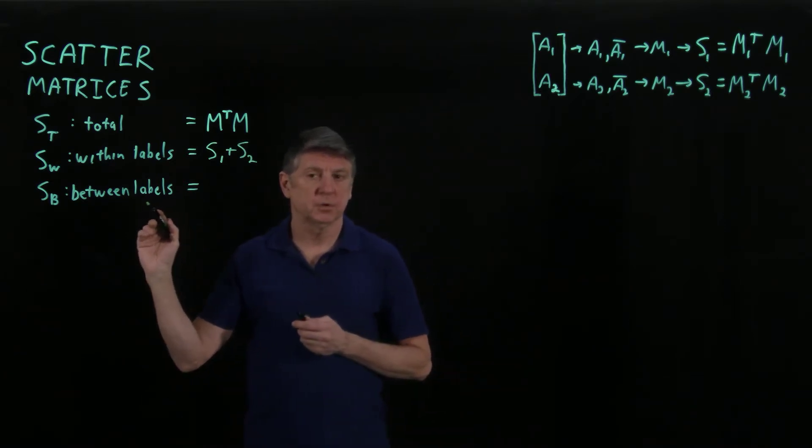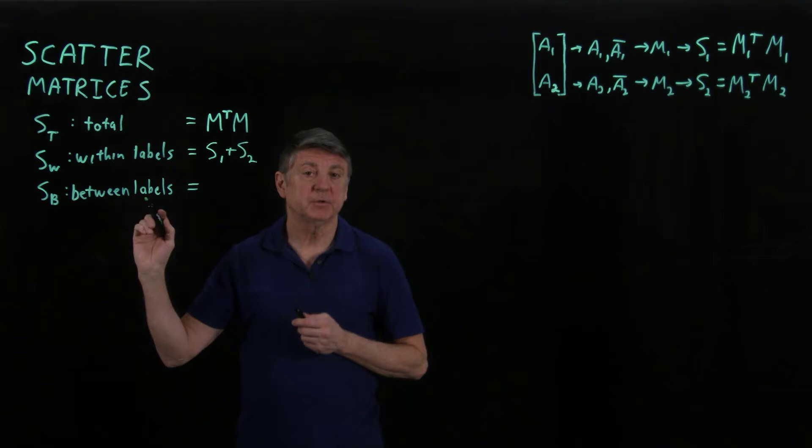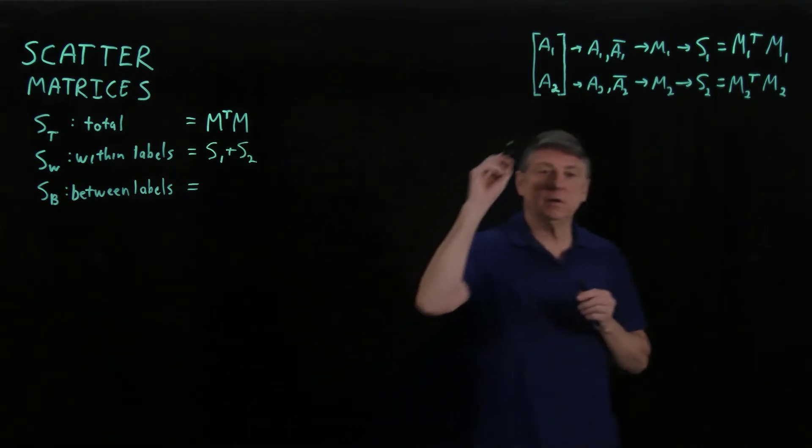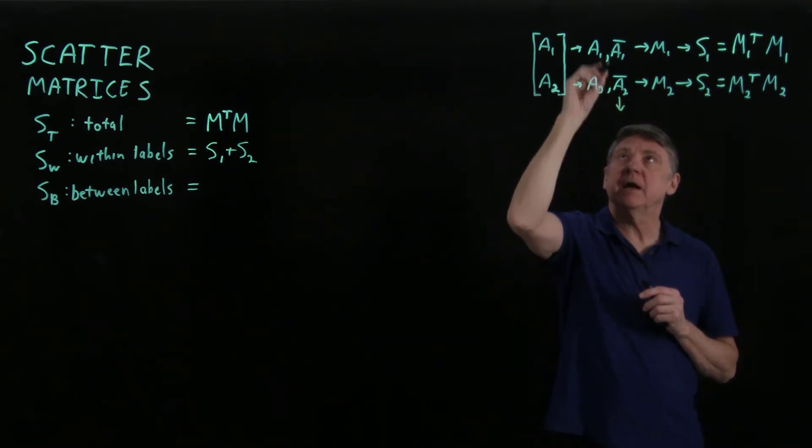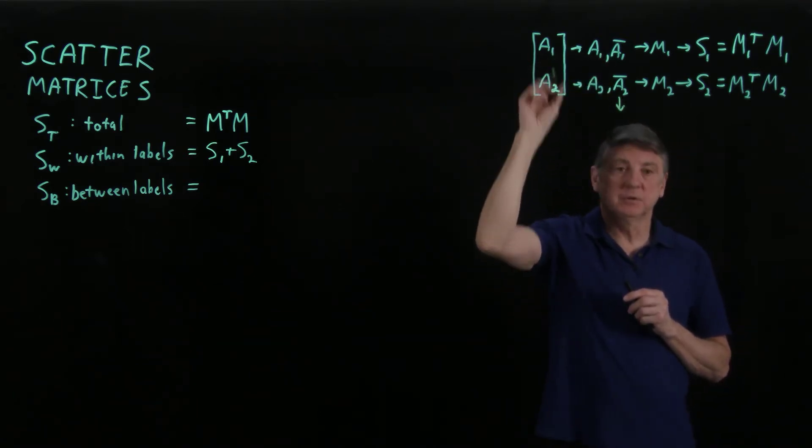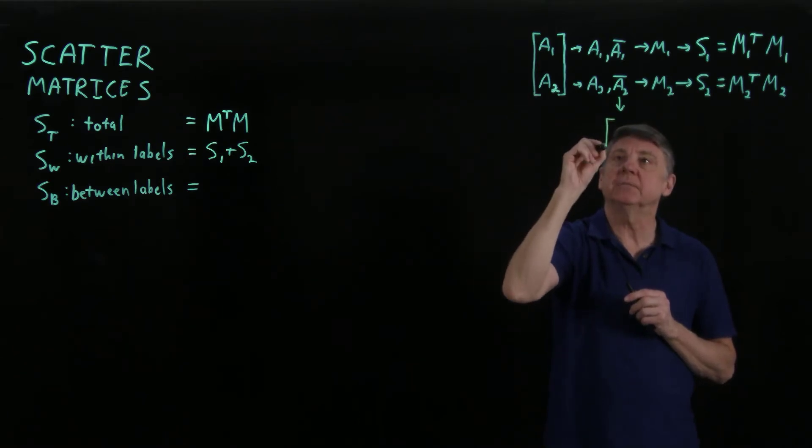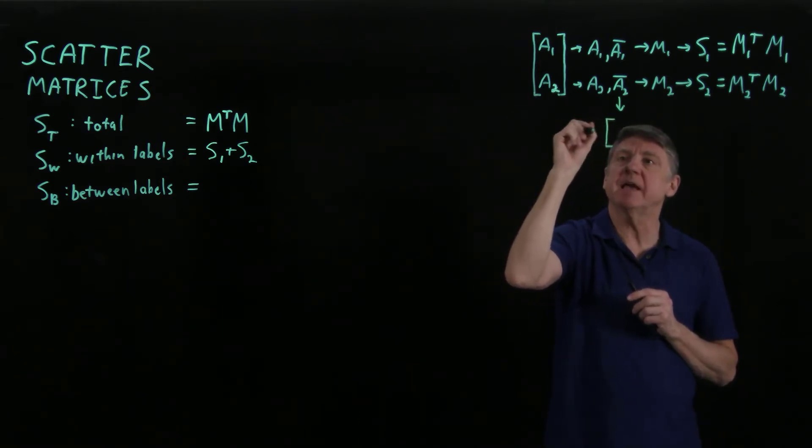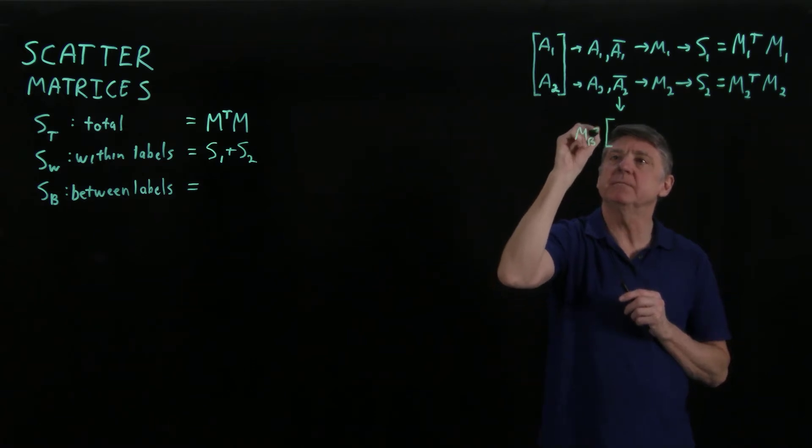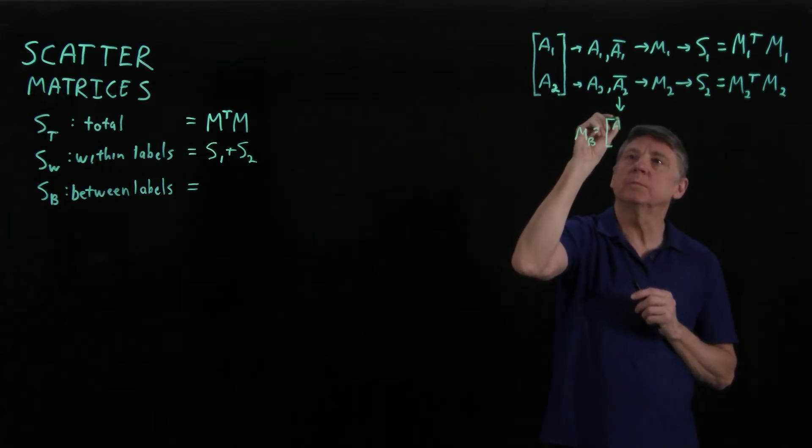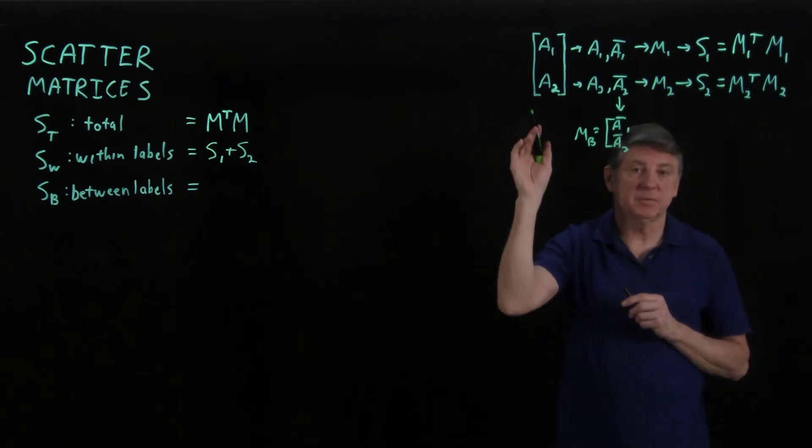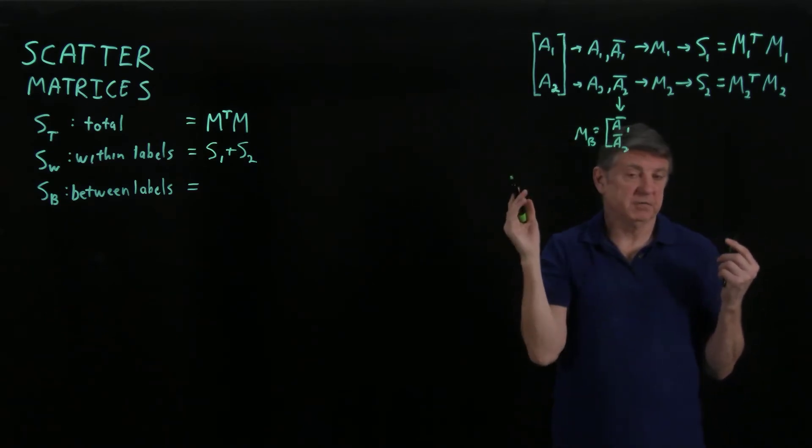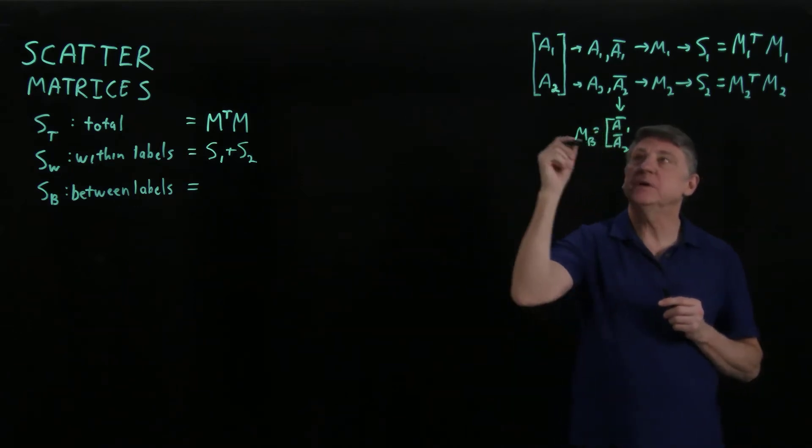And what Fisher proposed was that we also explore the scatter between labels. We take these row-like means of the labeled data matrices and accumulate them into a larger matrix. Let's call that matrix between, and its first row will be the mean of the first label, and its second row will be the mean of the second label. Now, these will not, in general, be zero mean.